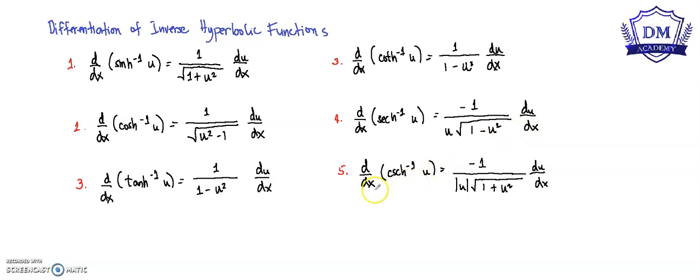Lastly, the derivative of the inverse hyperbolic cosecant of u with respect to x is equal to negative 1 all over the absolute value of u times the square root of 1 plus u squared, times the derivative of u with respect to x.